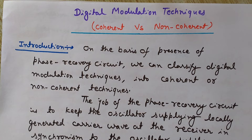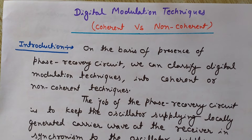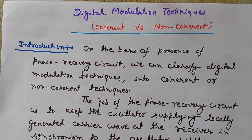The phase recovery circuit keeps the locally generated carrier wave at the receiving end in synchronism with the oscillator that supplies the carrier wave used to modulate the incoming data stream at the transmitter. We use oscillators to generate carrier waves at two places — at the transmitting end and also at the receiving end.